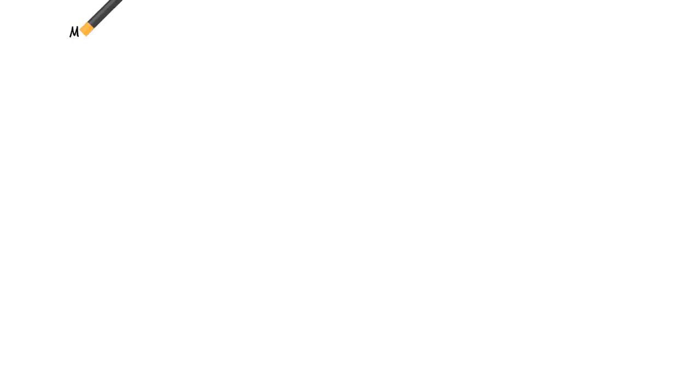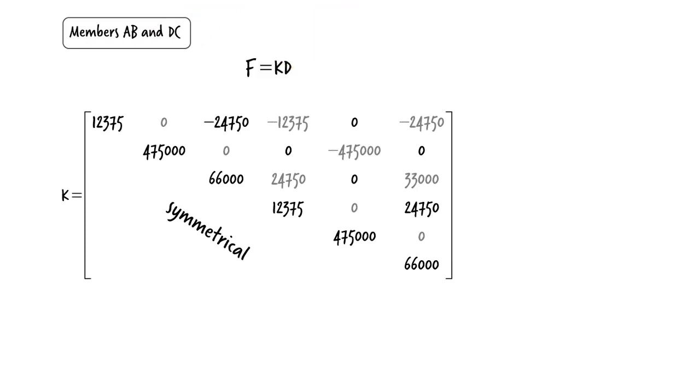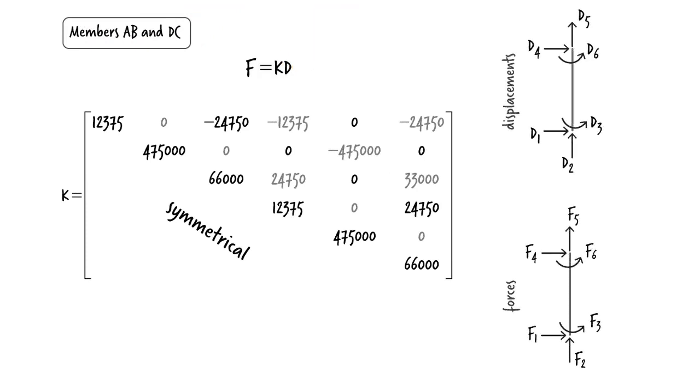Please keep in mind that the member stiffness matrix defines a mathematical relationship between the member-end displacements and forces. Here, D represents the vector of member-end displacements, and F is the member-end force vector, all specified in the global coordinate system.